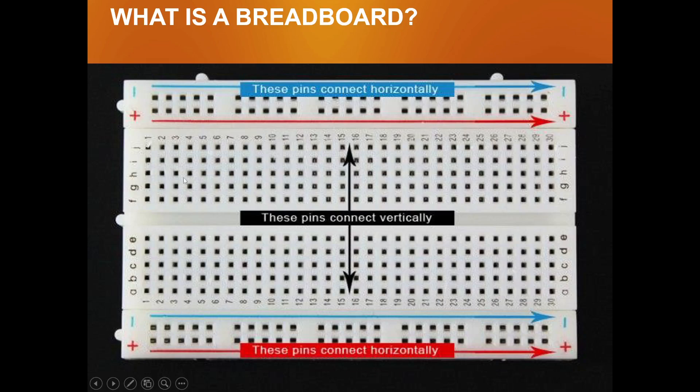Similarly on to this side. Here we have 30 things and same way you can see on to the bottom side. Here is a plus one and here is a minus sign. Don't worry, when we do the connections all those things will be getting more clear.